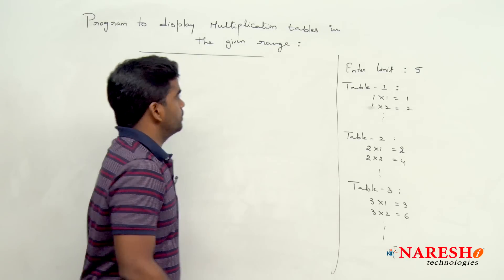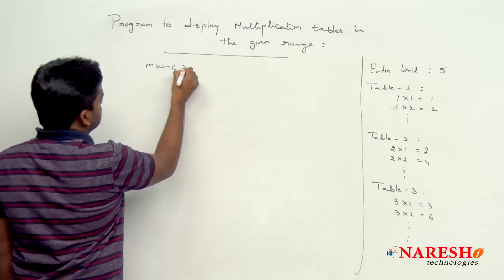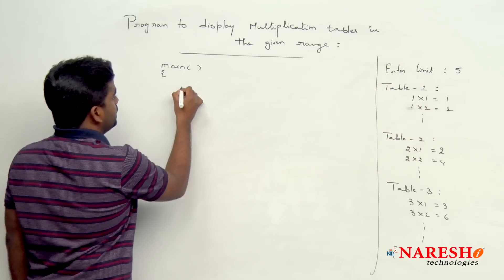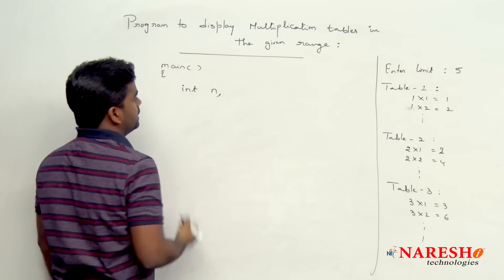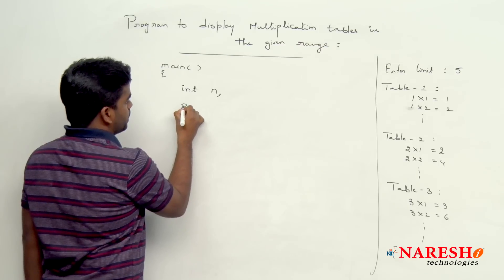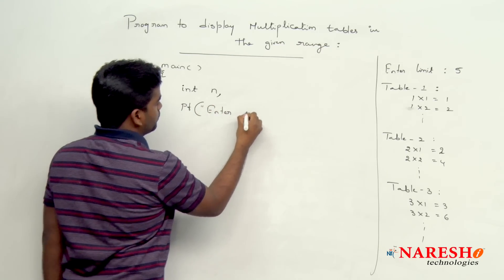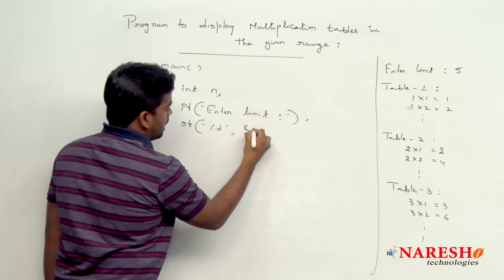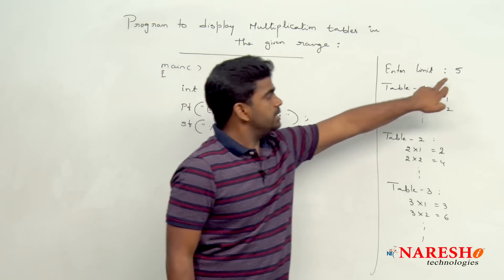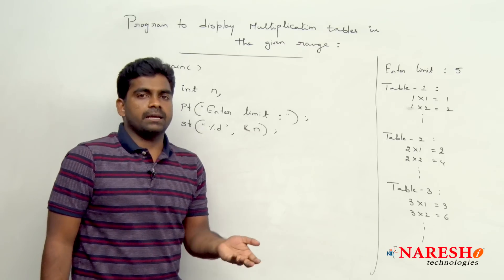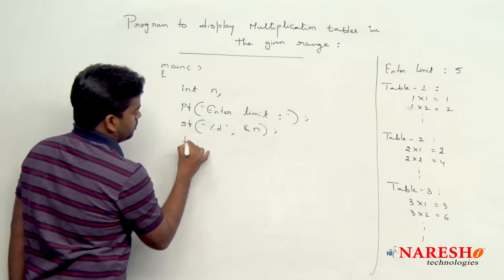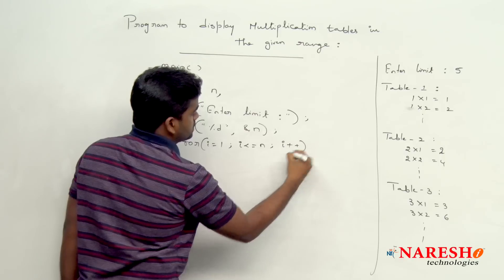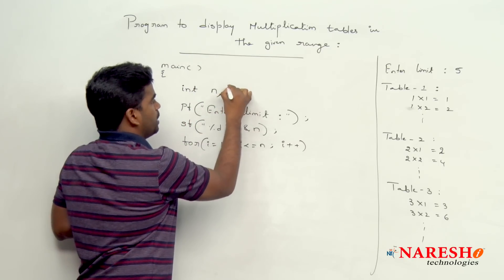Program execution starts with the main function. First we are asking the user to enter the limit. We declare one variable n, use printf to print 'enter limit', and then read it using scanf with percentage d and address of n. Suppose n value is 5. The outer loop has to repeat n times.